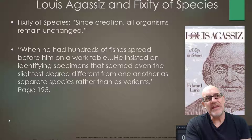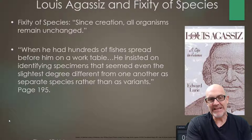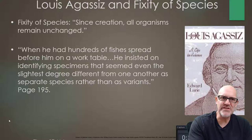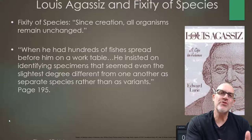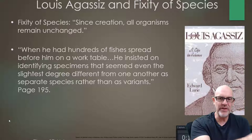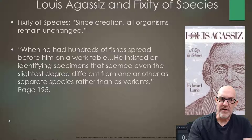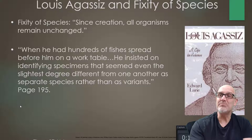Louis Agassiz also believed in fixity of species — there's a good biography on him if you want to read it. Stephen Jay Gould said he was the last real creationist. A quote from the book says that when Agassiz had hundreds of fishes spread before him on a work table, he insisted on identifying specimens that seemed even the slightest degree different as separate species rather than as variants. He didn't like the idea of variants — a species was created by God, put by God in that river or pond at the beginning of creation. This really affected creationism in a bad way in the years that followed.